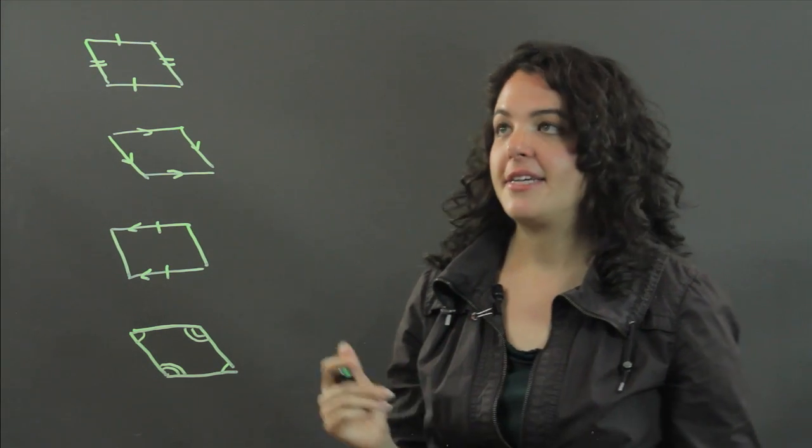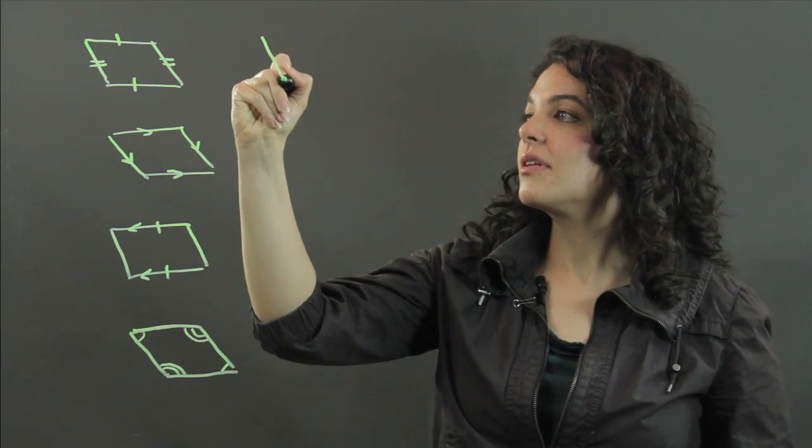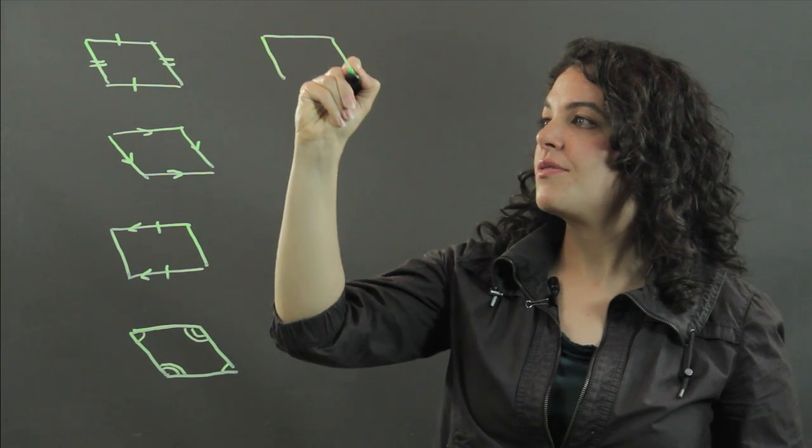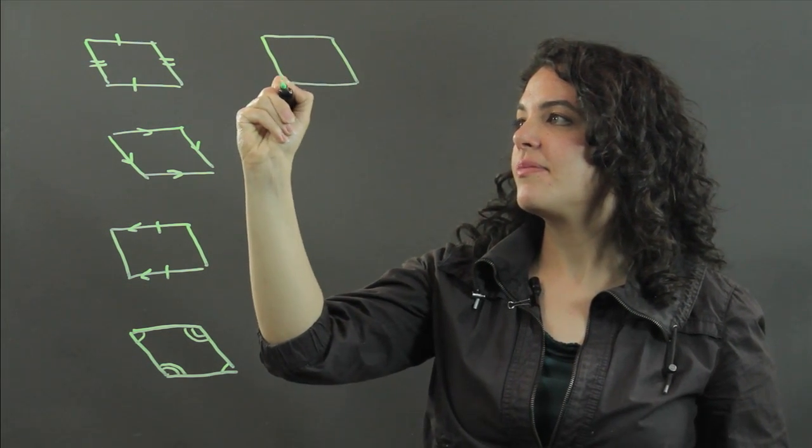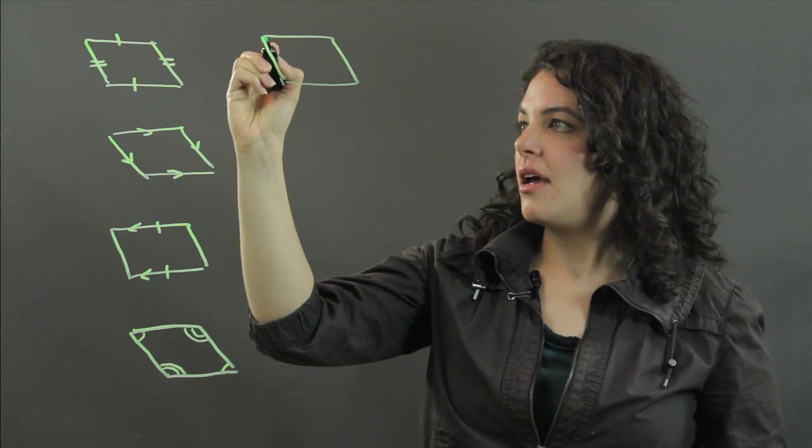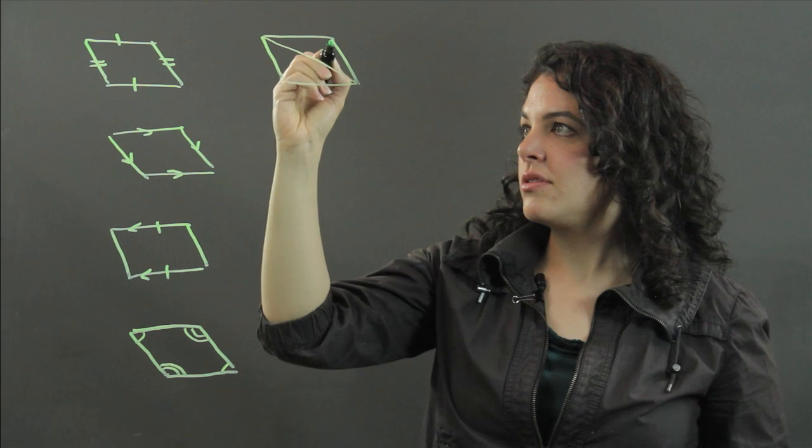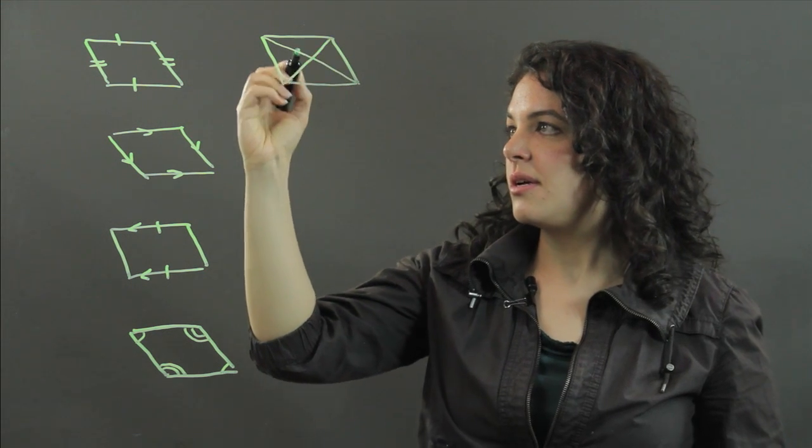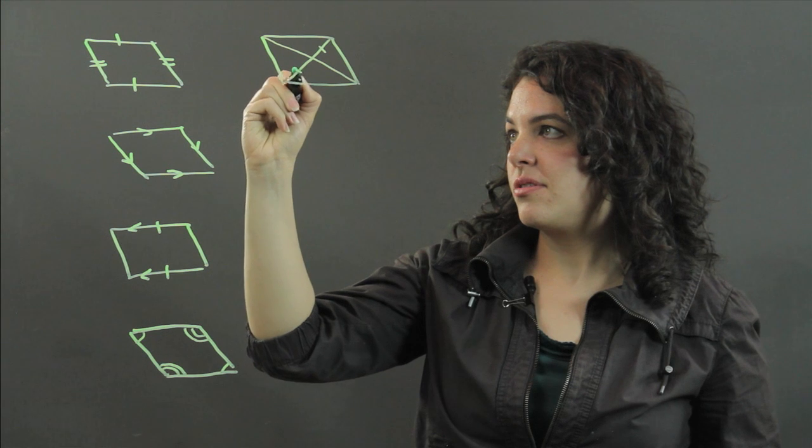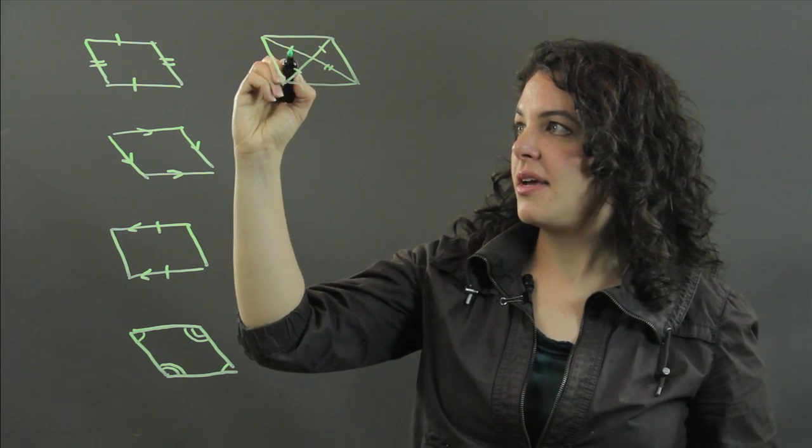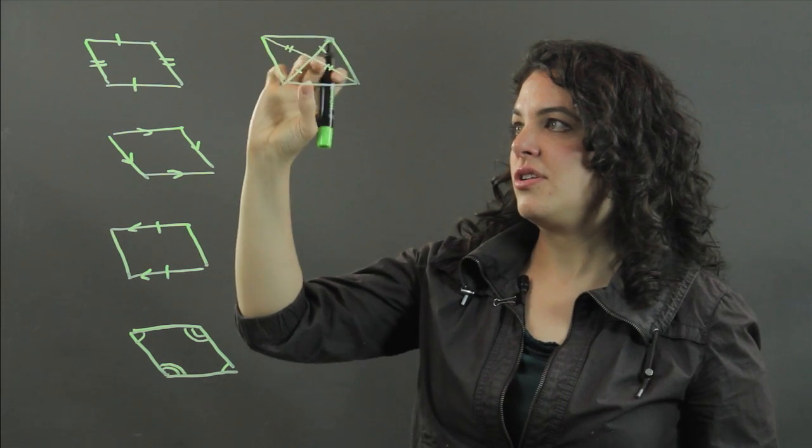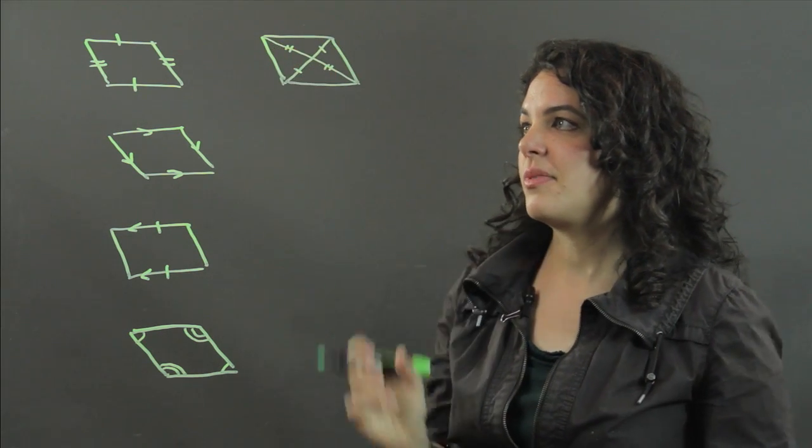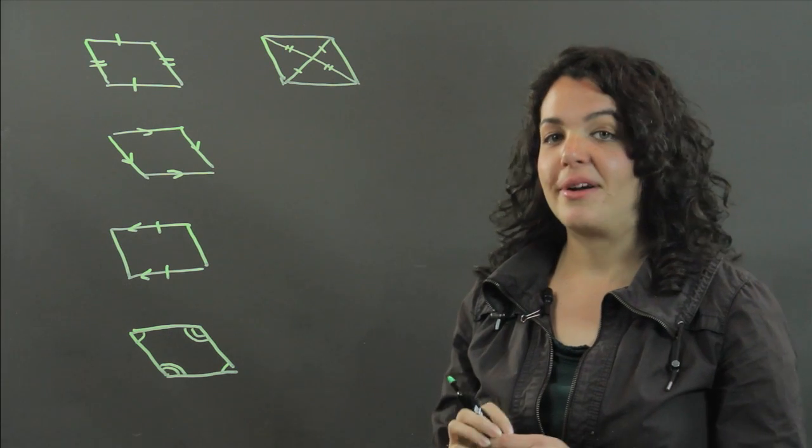And then a final test that you can use is if you have some parallelogram and the diagonals, when drawn, bisect each other, meaning they divide each other into two congruent parts, then you have a parallelogram.